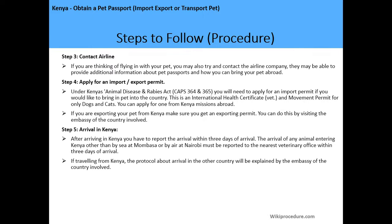Step 4 — apply for an import or export permit under the Kenya Animal Disease and Rabies Act. If you would like to bring a pet into the country, apply for an import permit — this is an international health certificate and movement permit for dogs and cats only. Applications can be made from Kenya missions abroad. If exporting your pet from Kenya, obtain an export permit by visiting the embassy of the country involved.